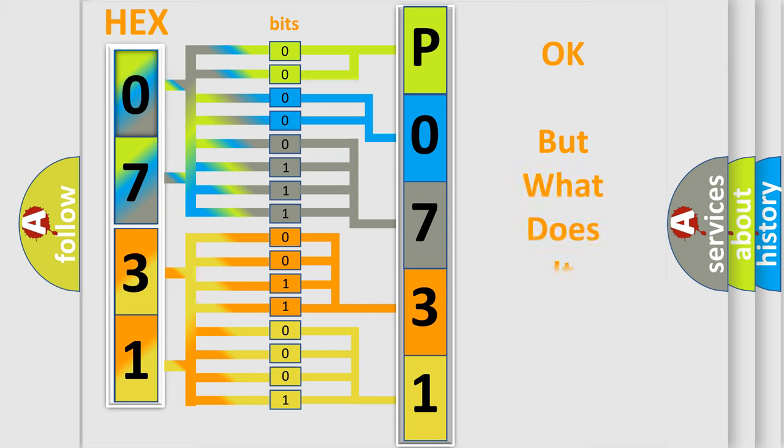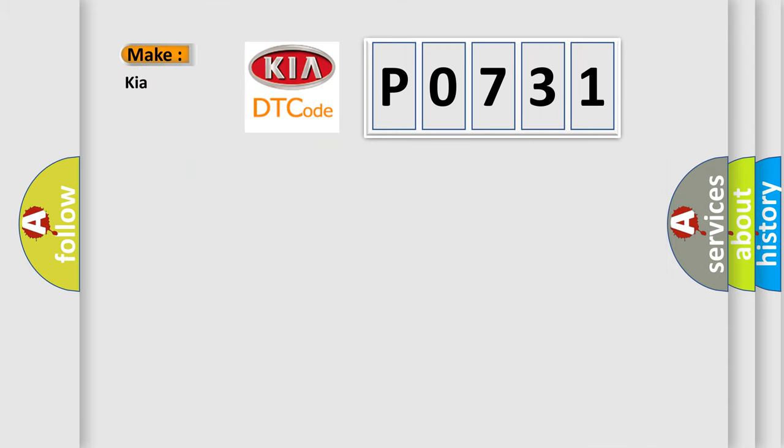The number itself does not make sense to us if we cannot assign information about it to what it actually expresses. So, what does the diagnostic trouble code P0731 interpret specifically for Kia car manufacturers? The basic definition is: Trans preference switch circuit low.